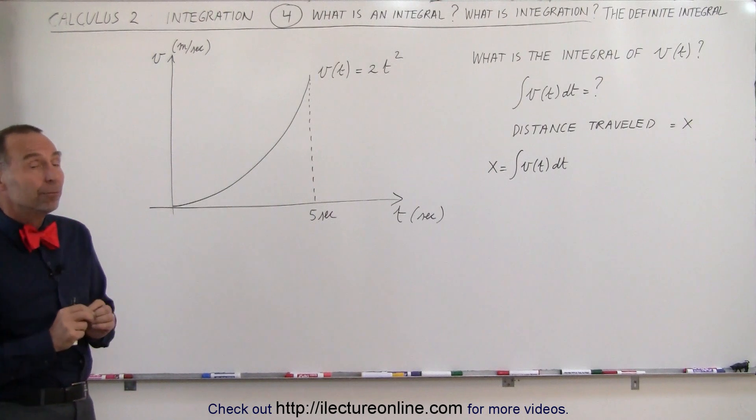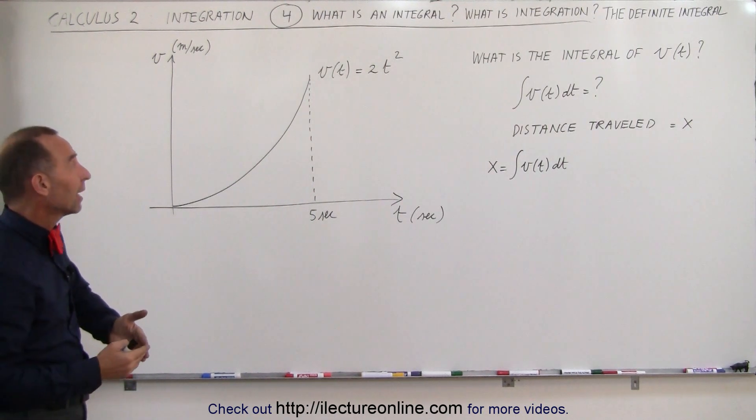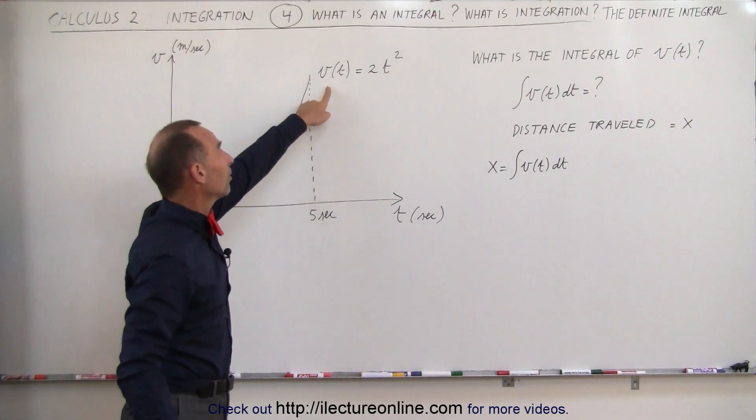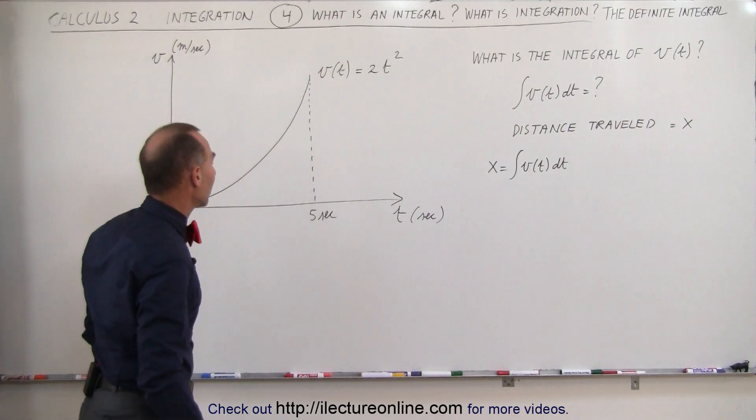Again, we're going to do a definite integral. Here's a function. This function describes the velocity of an object as a function of time. Velocity is equal to 2t squared. t is in seconds. Velocity is in meters per second.